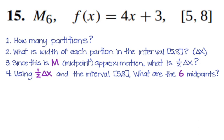So using the one half delta X and the interval, what are the six midpoints? And so you're going to find out what, you're still only going to have six of them, but you need to figure out what they are. And you'll find six of them. So you'll have midpoint number one, midpoint number two, you'll have six of those.